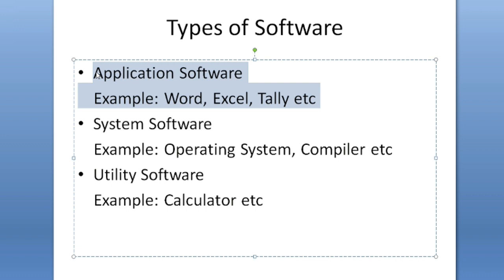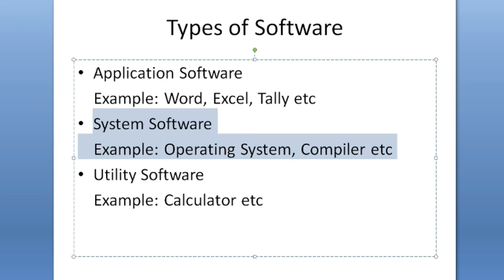The second type is system software. System software means software which is related to your system — it operates your hardware. That is why it is called system software; here 'system' means computer system. Whatever software operates your computer or your hardware device is called system software. For example, the operating system is a huge software responsible for providing the interface between the user and the hardware.